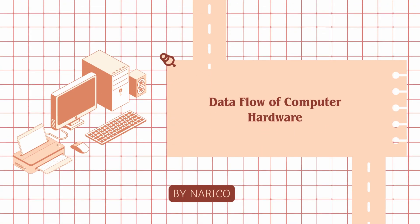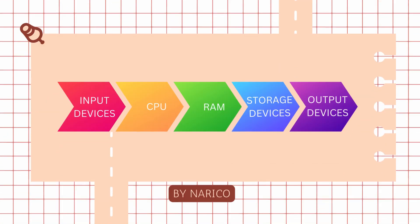The data flow in a computer system refers to the movement of data through various components, from input to processing, storage, and output. Here's a breakdown of how data flows through a typical computer system. Step 1: Input stage. Data flow begins with input devices, which capture data from the user or environment. Examples include keyboards, mice, scanners, and microphones. These devices convert user actions or external data into digital signals that the computer can process.